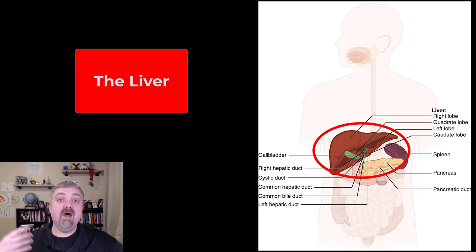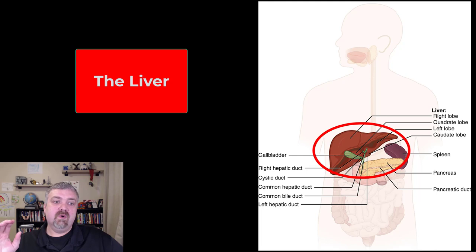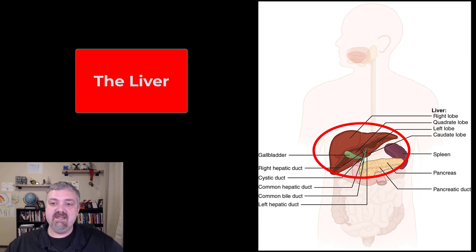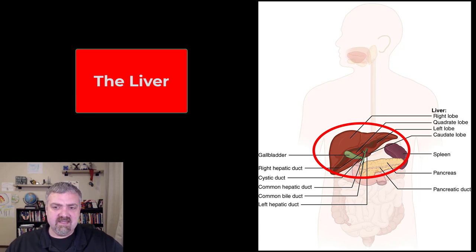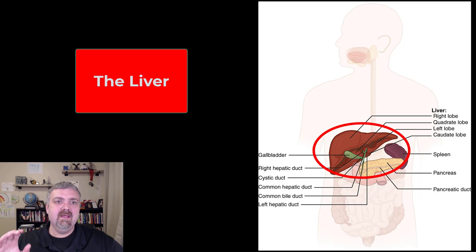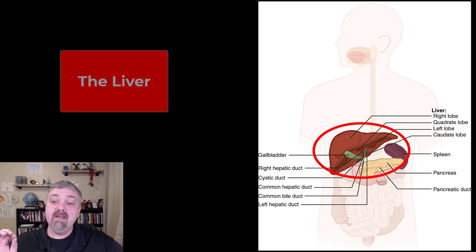We can't cover the hundreds of functions that it has in any one video, so we're going to talk primarily about the classes of functions that it has. It's resting right under the diaphragm in the upper right quadrant, and it's kind of been picked up here so you can see the back a little bit. Behind it would be the gallbladder, and we'll talk about why they're intimately connected. The liver does weigh generally about three pounds — such a large organ.